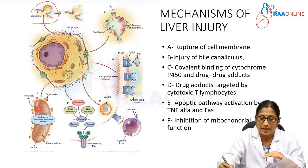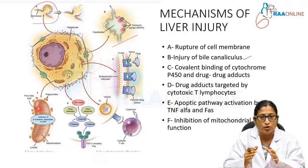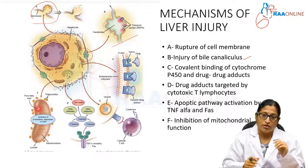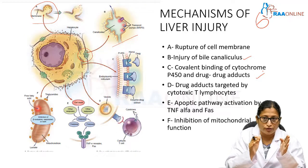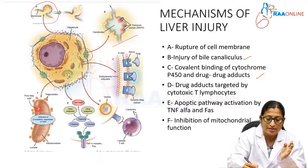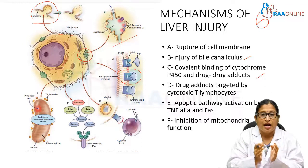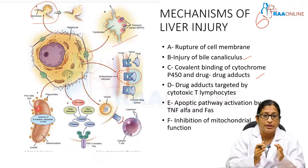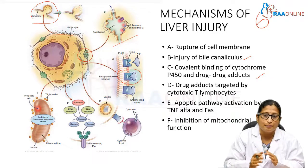The second mechanism is injury to the bile canaliculus. There is destruction of the bile canaliculus, and such patients present with a cholestatic type of liver injury. The third mechanism is covalent binding of the cytochrome P450 enzyme and the drug, forming drug adducts. These drug adducts inhibit the enzyme and the various proteins and enzymes involved in drug metabolism, resulting in drug toxicity.